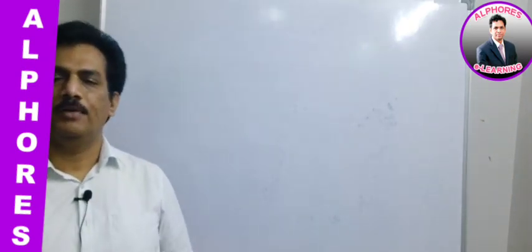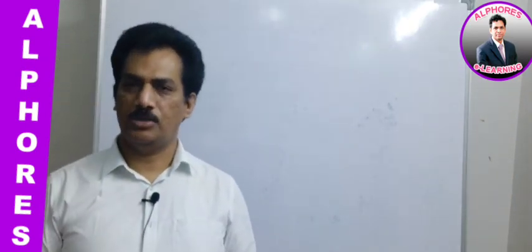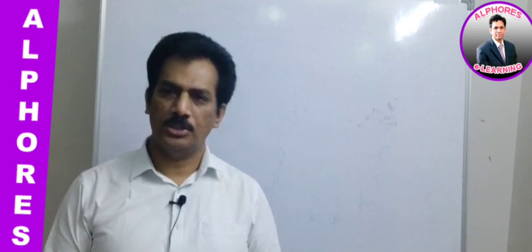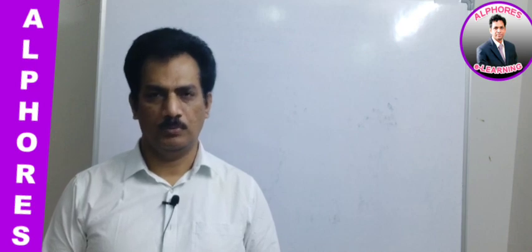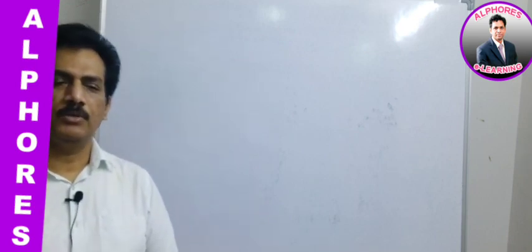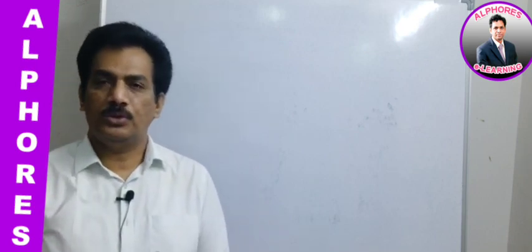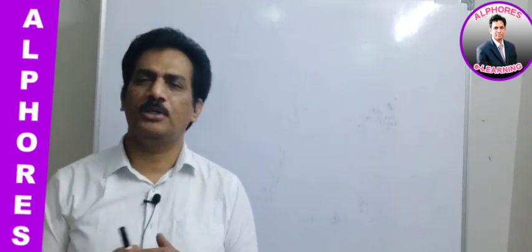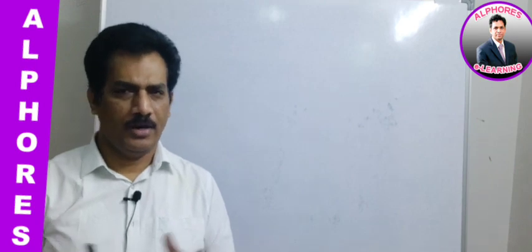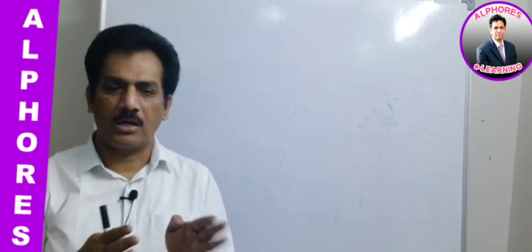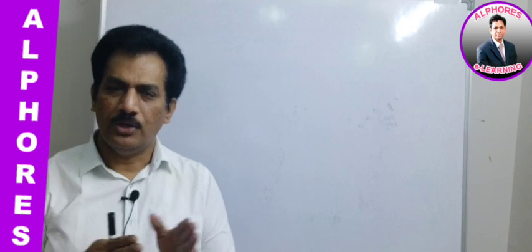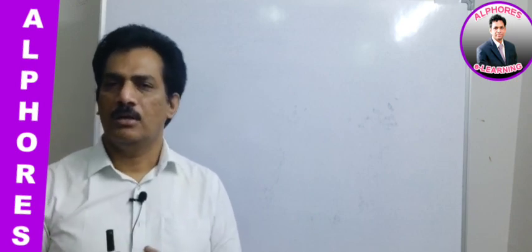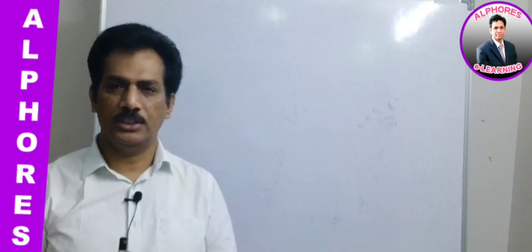Hi students, welcome to ALFO's e-learning chemistry classes for second year. The running chapter is organic chemistry and we are in session number two. In the previous session, we discussed how to study organic chemistry in an easy manner — the principle of divide and rule, and how to divide the organic study into different parts and which part covers what concepts.